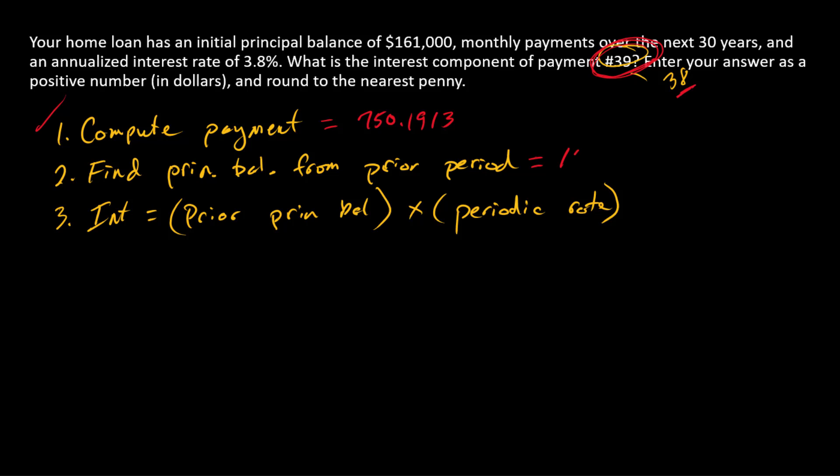But that principal balance is the following. Step three then says that the interest component of that payment is just this number. So that's the prior principal balance multiplied by the periodic rate of interest. And so here we have $151,310.4103, and we're going to multiply that by the periodic interest rate.